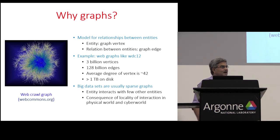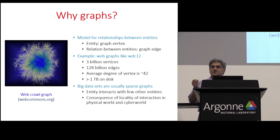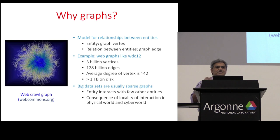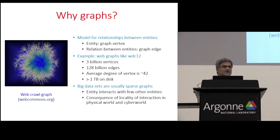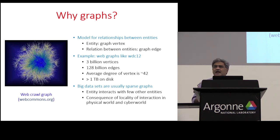Unstructured data — why graphs? In my opinion, graphs are an excellent model for understanding relationships between entities. These entities get mapped to graph vertices, and if there's a relationship between two entities you represent that by an edge. Sometimes you have multiple relationships between entities — that's fine, you can have multiple edges, in which case it's called a multi-graph. In many of these problems you have labels on nodes and edges that you have to compute. There's lots of interesting algorithm work in this area.